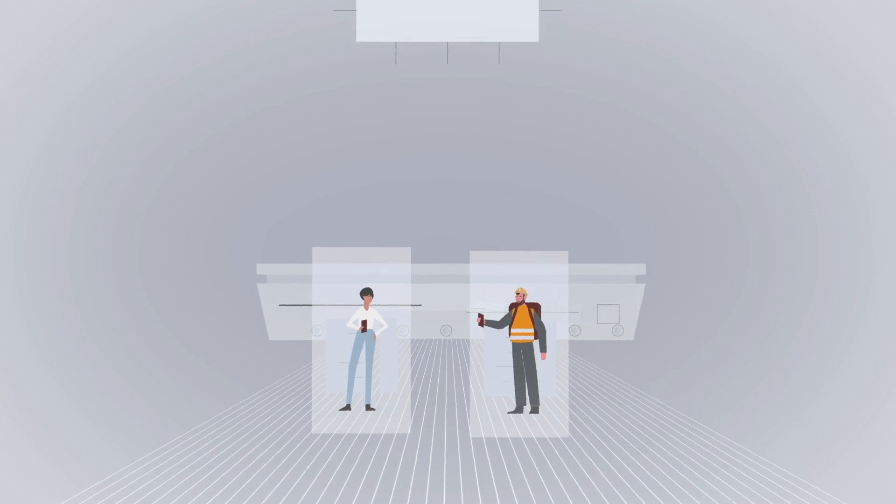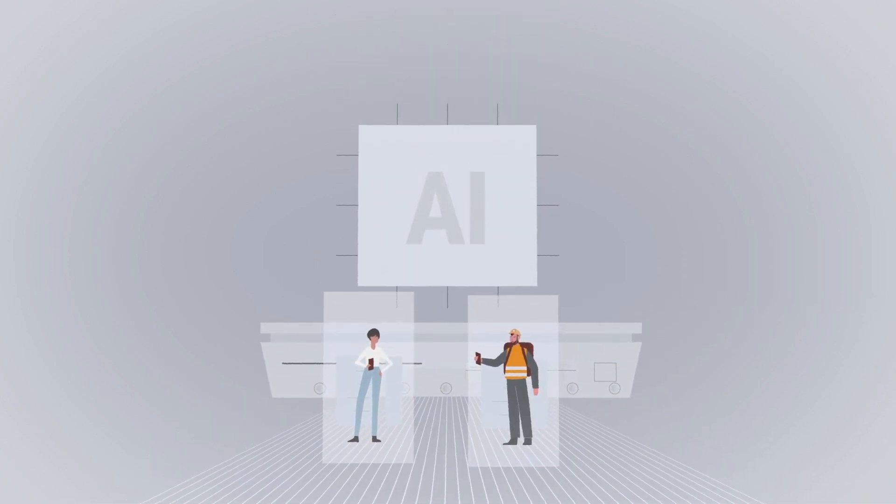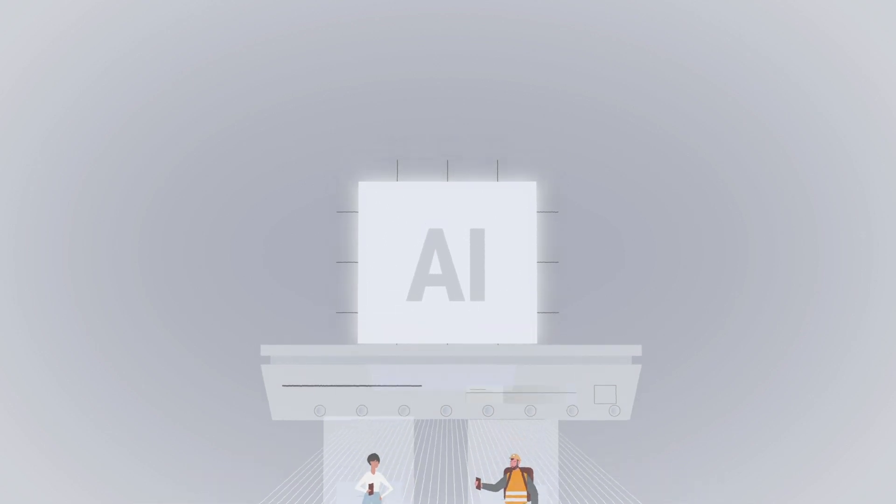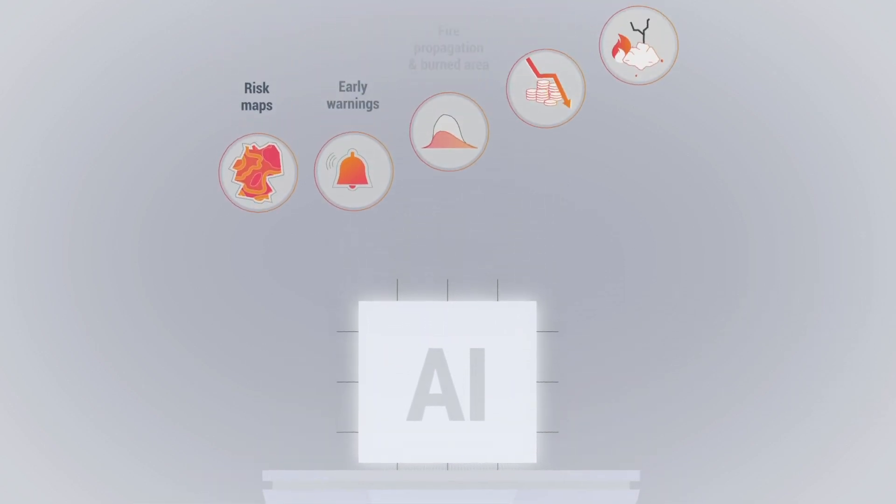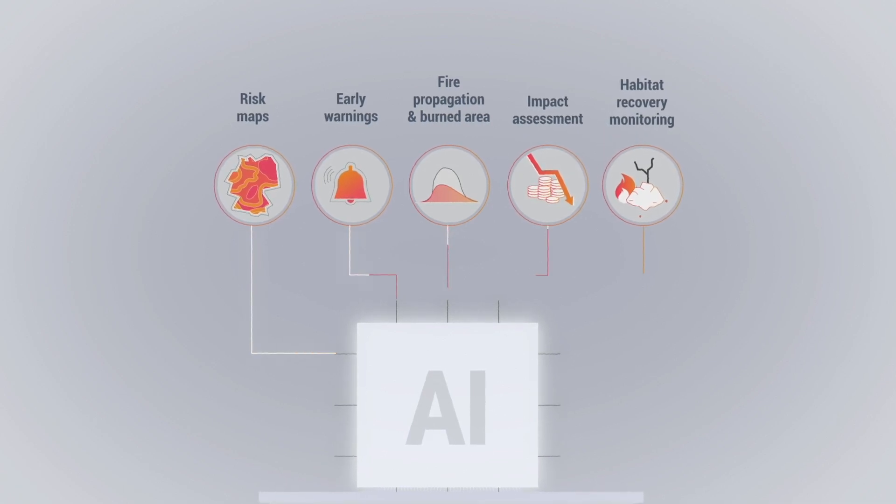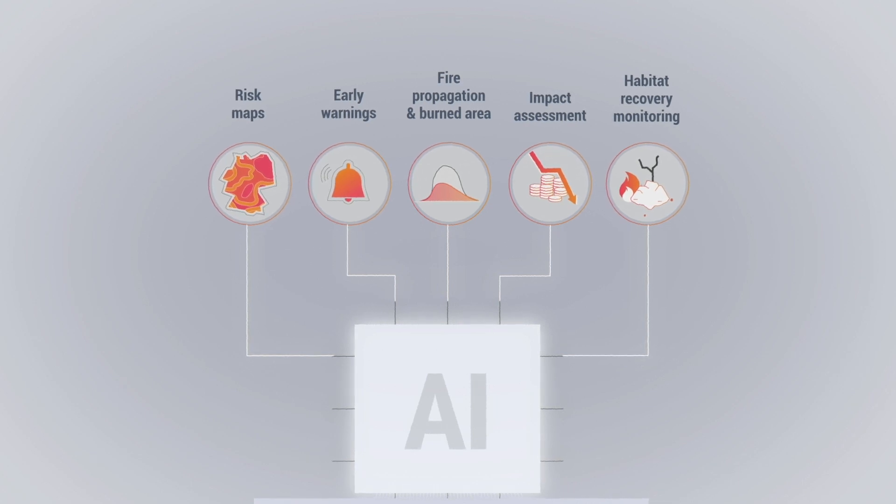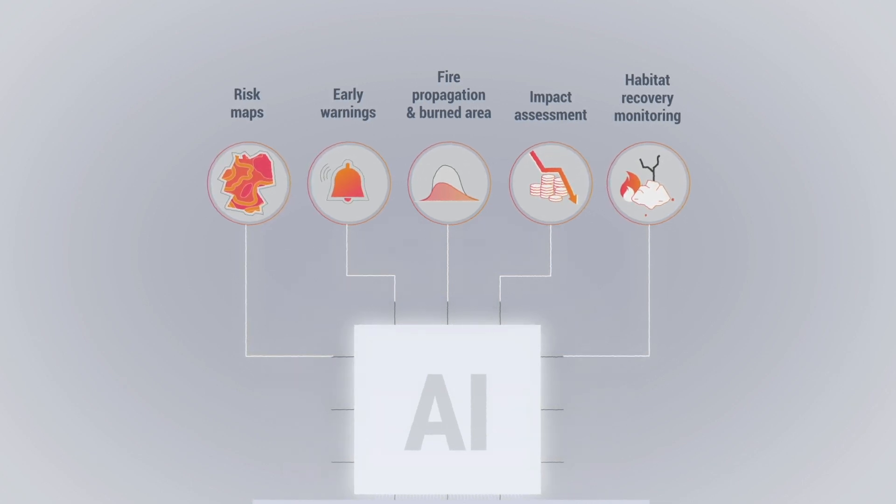Such big data will be processed using artificial intelligence algorithms to generate useful information: risk maps to better plan preparedness actions, early detection of active fires, fire propagation predictions, burned area and firefront delineation, impact assessment estimations, and habitat recovery maps.